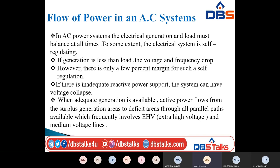If the generation is less than the load, voltage and frequency will drop. If there is inadequate reactive power support, the system can have voltage collapse. When adequate generation is available, active power flows from the surplus generation areas to deficit areas through all parallel paths available, which frequently involves extra high voltage (EHV) and medium voltage lines.